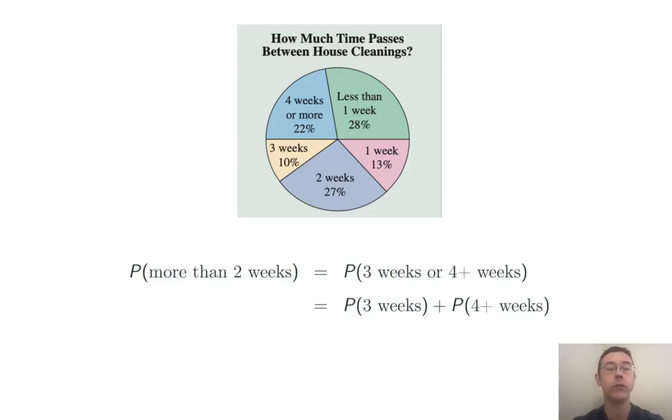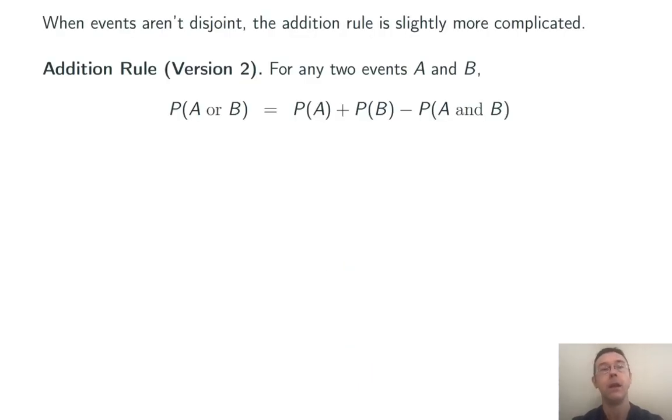So in this case we're interested in the probability that we've selected a random homeowner in the blue or yellow piece of the pie. These are mutually exclusive events. You can't both clean your house every three weeks and four weeks or more. So we can add the two probabilities. The probability of cleaning the house every three weeks is 10%. The probability of cleaning it four or more weeks is 22%. Adding those up we get a total probability of 32%.